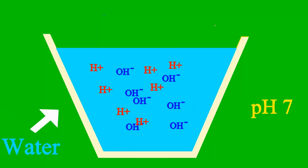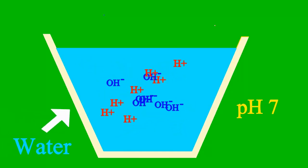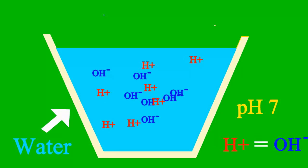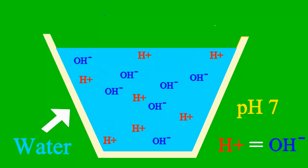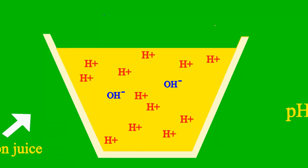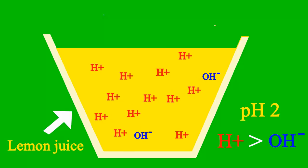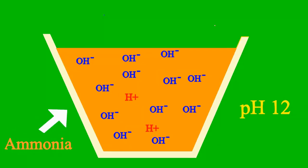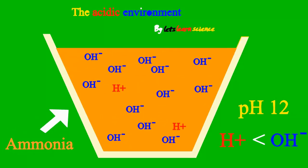When the pH is 7, the sample is neither an acid nor a base. Less than 7 it's an acid, and more than 7 it's a base.